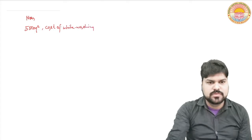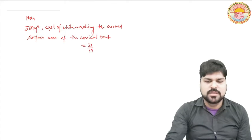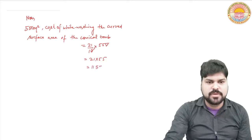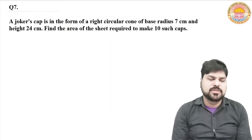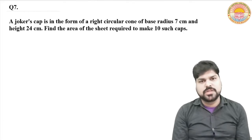Now 550 meter square cost of whitewashing the curved surface area of the conical tomb is equal to 21 by 10 into 550. This gives us 1155 rupees.